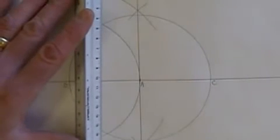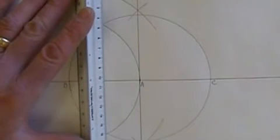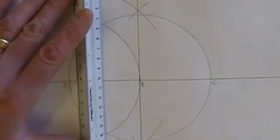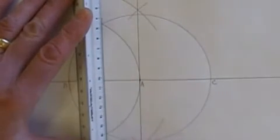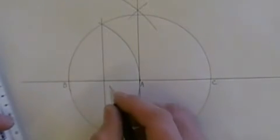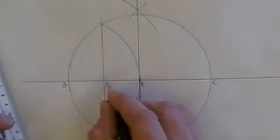Again, take your straight edge, and where that arc intersected the circle, draw a straight line. Where they intersect, let's label that as point D.